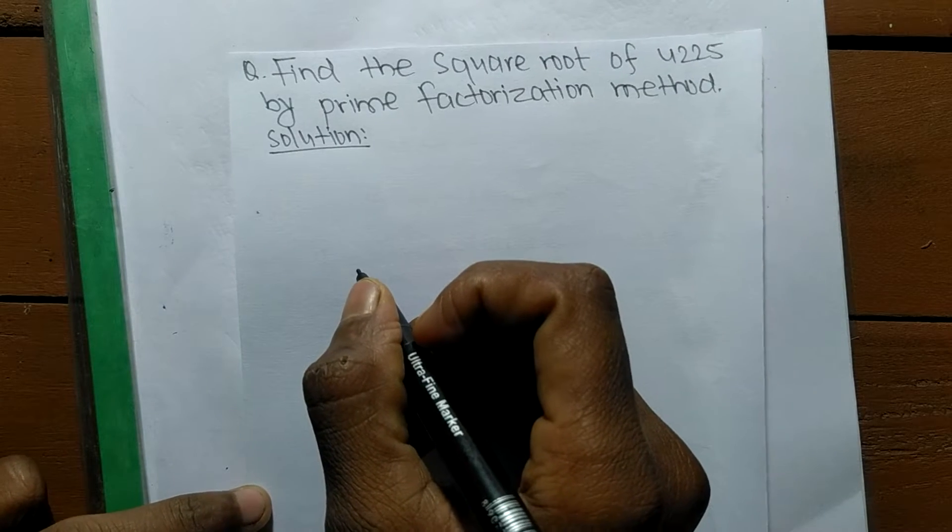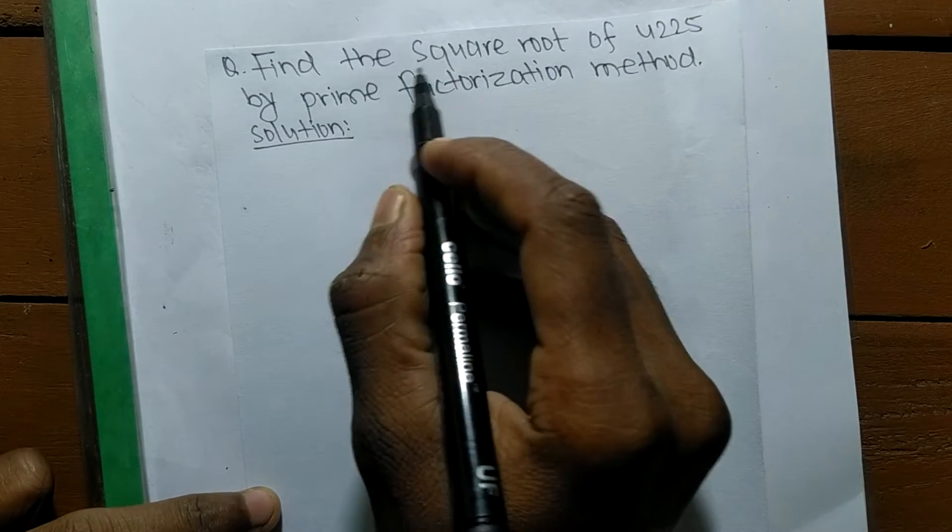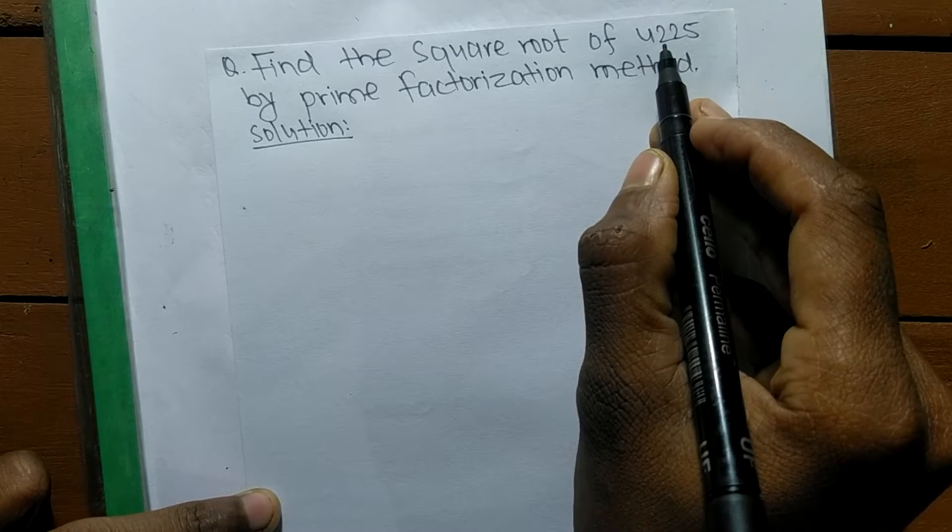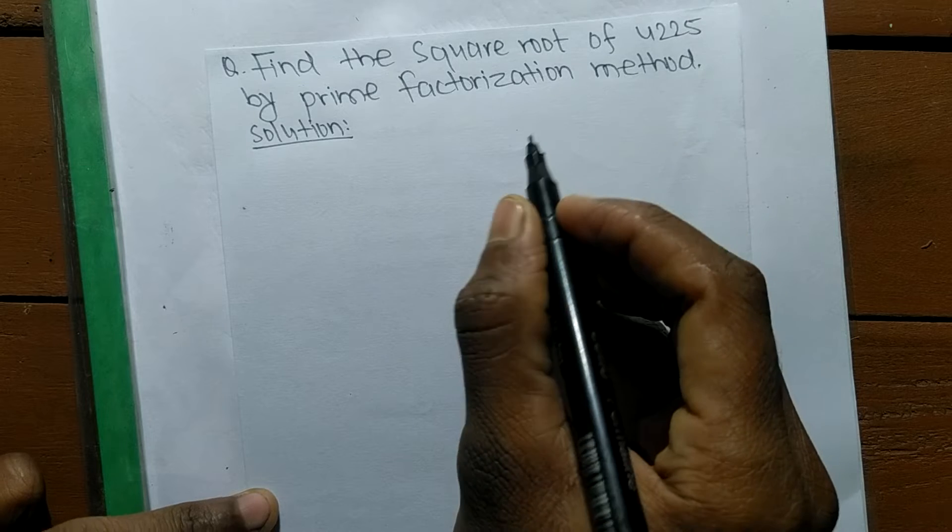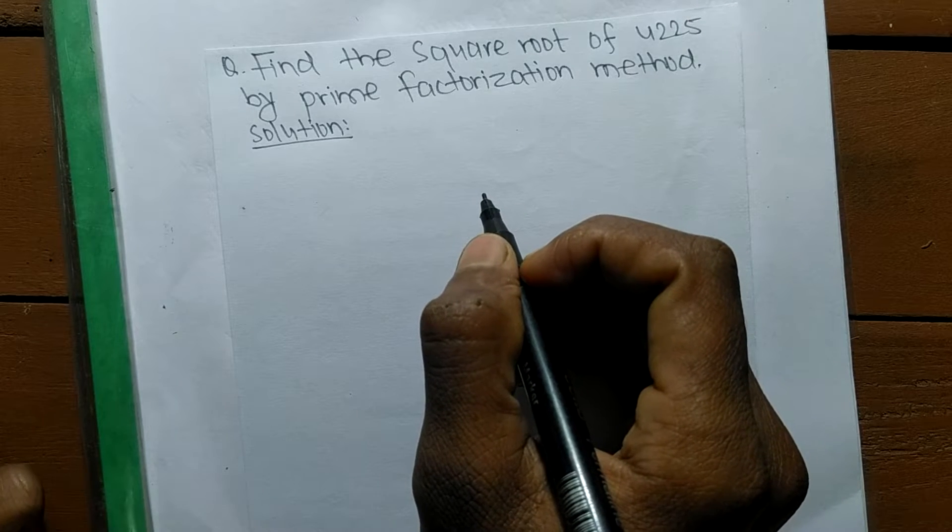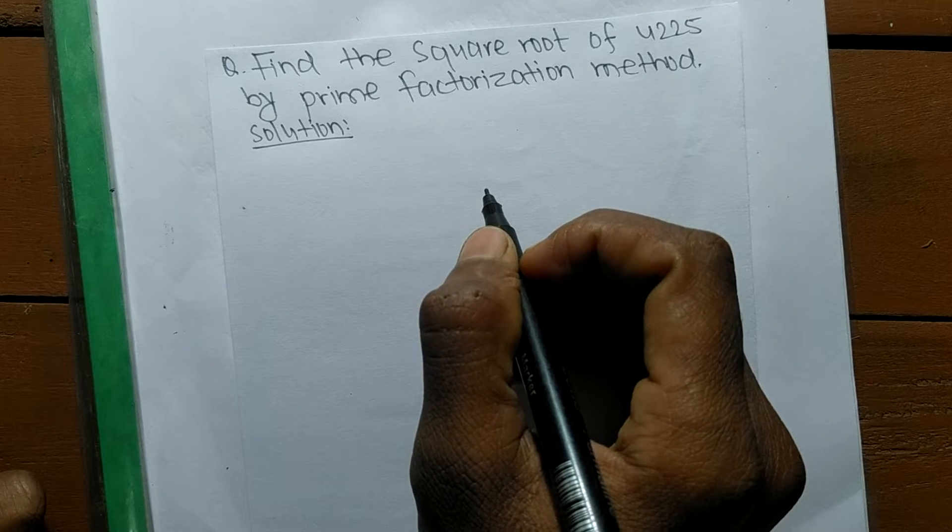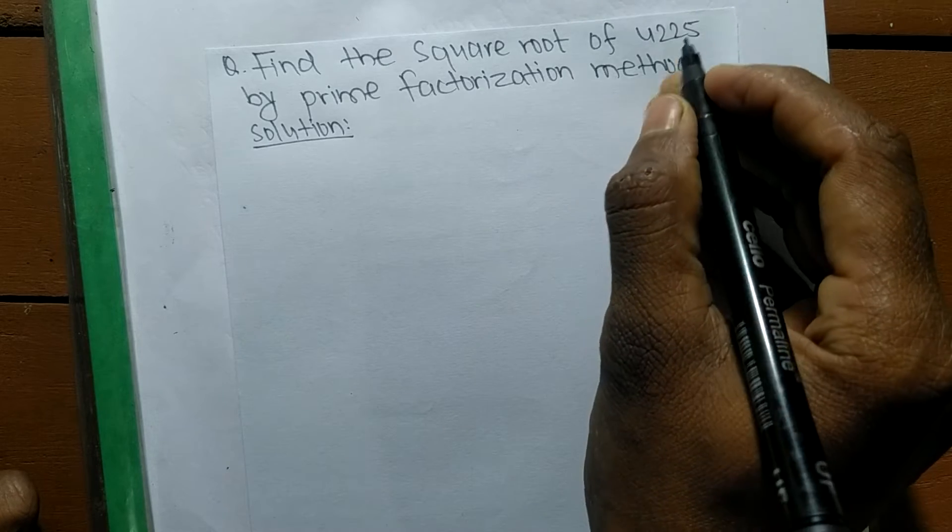Today in this video we shall learn to find out the square root of 4,225 by prime factorization method. To find out a square root by prime factorization method, first we have to find out the prime factors of the given number.